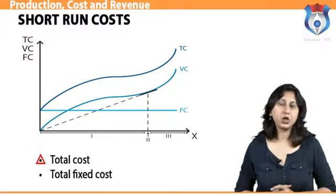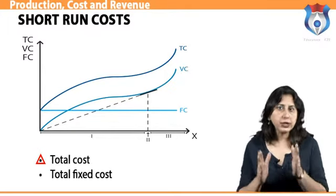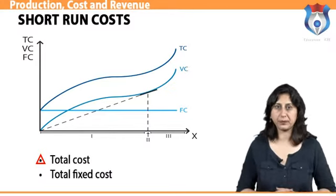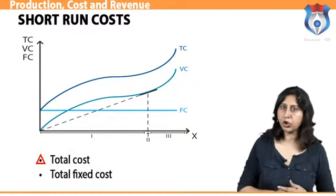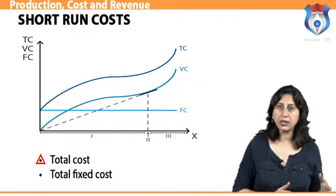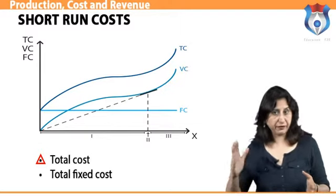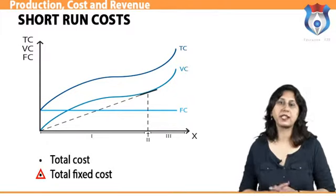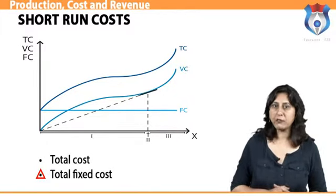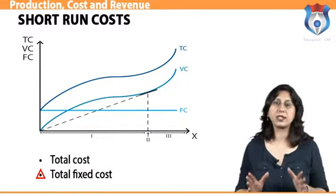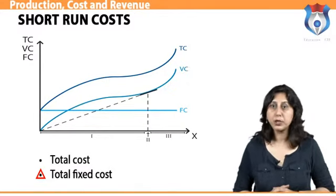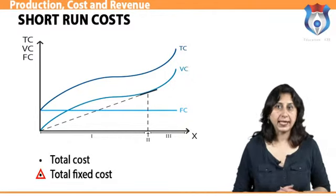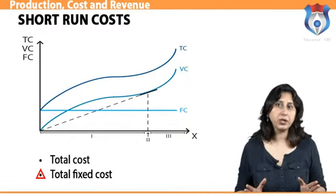Total cost is the overall opportunity cost incurred by a firm in production. For short run production, total cost consists of variable cost — which depends on the quantity produced — and fixed cost — which does not vary with production. Total fixed cost is the cost of production that does not change with changes in the quantity of output produced by a firm in the short run; at any and all levels of output, fixed cost is the same.